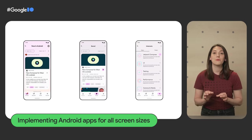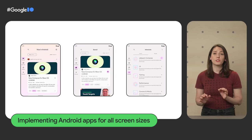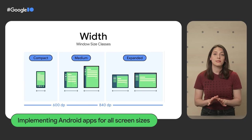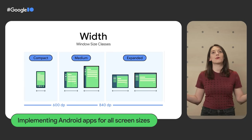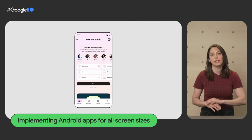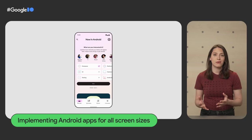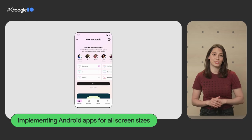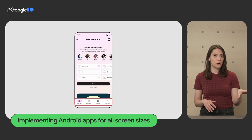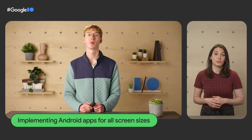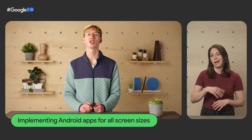If you want to build adaptive UIs in Compose, 'Implementing Android Apps for All Screen Sizes' walks you through how the Now in Android sample was built — each screen implemented following design based on window size classes. You'll learn how to manage the navigation structure, why you should use only one navigation graph, and how to pick the right component depending on window size class: navigation bar for compact, navigation rail for medium, and navigation drawer for expanded.